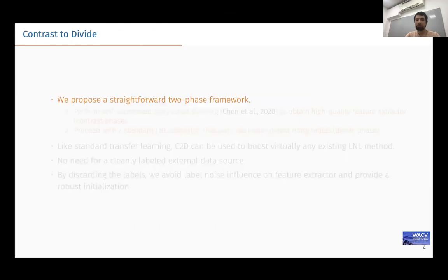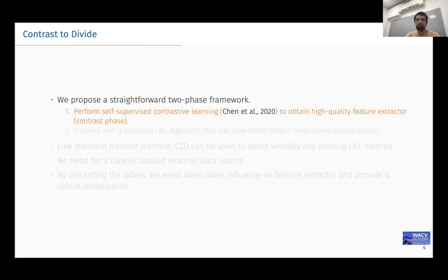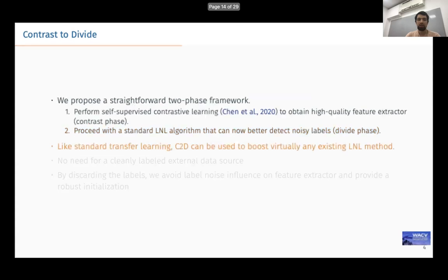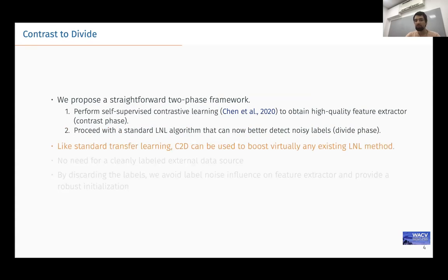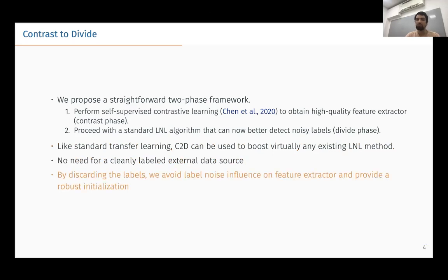To solve the warm-up obstacle, we propose a two-stage framework named contrast-to-divide, or C2D. In the first contrast stage, we perform self-supervised learning on the unlabeled data, obtaining high-quality initialization for the second divide stage, in which we use some standard learning with noisy labels algorithm. Similarly to transfer learning, this approach can work with any learning with noisy labels method. It also doesn't require any external data, and since we don't use labels in pre-training, noise doesn't influence first stage providing robust initialization.